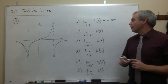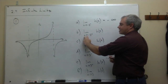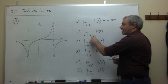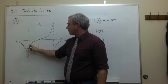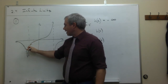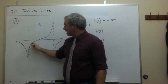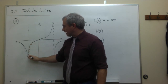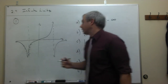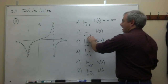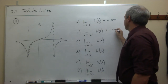Part B asks the same question except this time x is approaching negative 2 from the right side. So instead of coming at this asymptote from the left, we're coming at it from the right, getting closer and closer. You can see the y values are getting smaller and smaller — they're approaching negative infinity. So the limit as x goes to negative 2 from the right is also negative infinity.